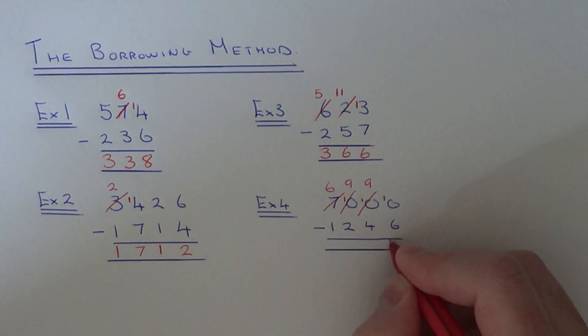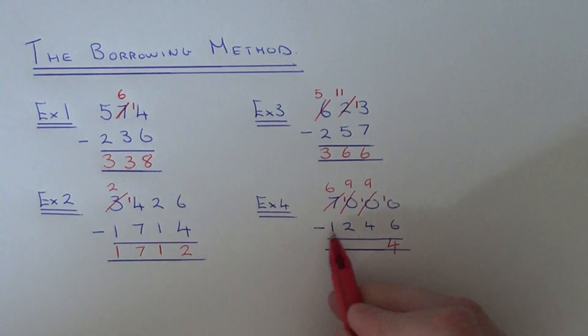What's 10 take away 6? That's 4. 9 take away 4 is 5. 9 take away 2 is 7. 6 take away 1 is 5.